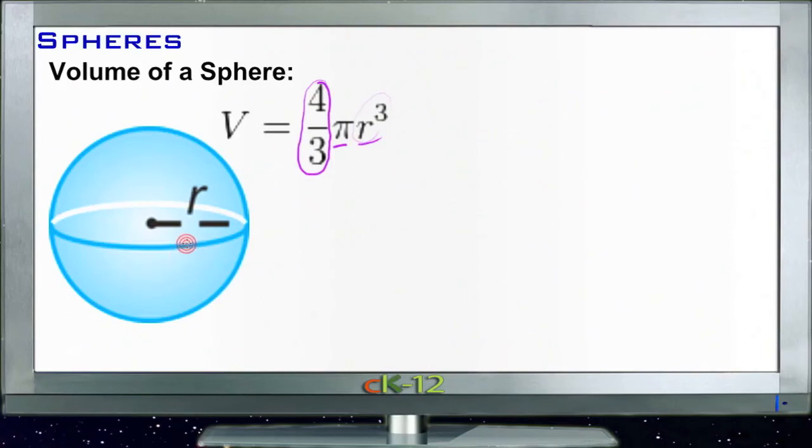Again, if we have a radius this time of 4 units, then the volume of a sphere whose radius is 4 units would be 4 cubed. 4 times 4 is 16, times 4 is 64, times π, times 4 thirds or 1 and 1 third.